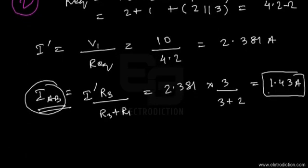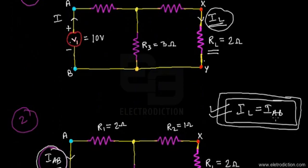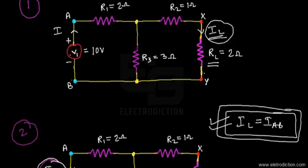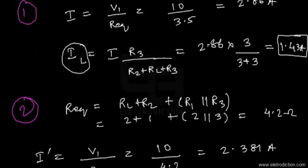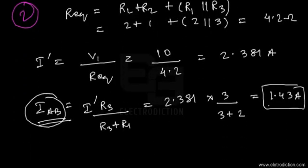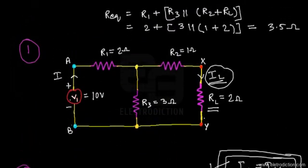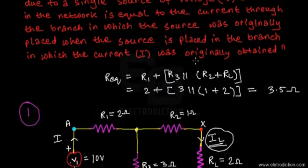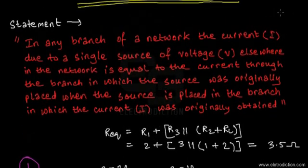This example validates the statement of the reciprocity theorem: I_L equals I_AB. This is how you apply the reciprocity theorem to electrical networks and prove that the currents are equal. That brings us to the end of this tutorial on the reciprocity theorem — thanks for watching, and stay tuned for the next one.